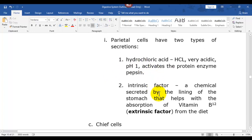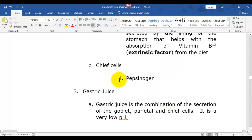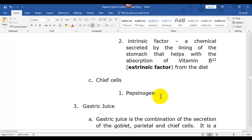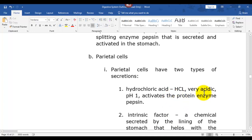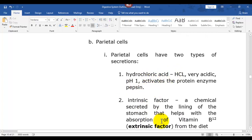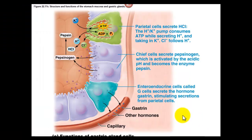Hydrochloric acid mixes with an inactive protein enzyme in the stomach called pepsinogen. Parietal cells also produce intrinsic factor, which allows for the absorption of vitamin B12 from the diet. If a person has low vitamin B12 it affects red blood cell production — vitamin B12 is also called extrinsic factor. Chief cells produce pepsinogen, which is an inactive protein enzyme. When pepsinogen mixes with hydrochloric acid it becomes pepsin. Gastrin is a hormone that activates stomach acid.